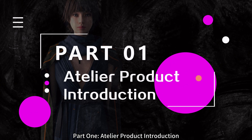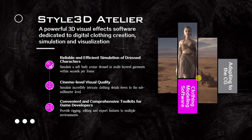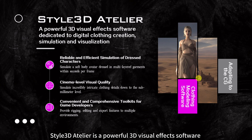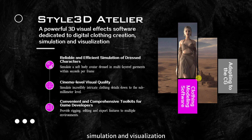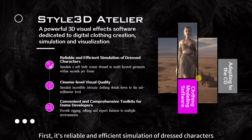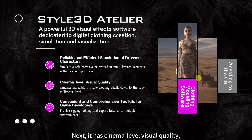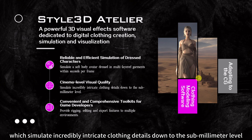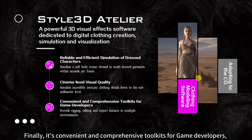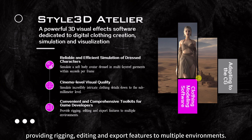Part 1: Atelier Product Introduction. Style 3D Atelier is a powerful 3D visual effects software dedicated to digital clothing creation, simulation, and visualization. First, it offers reliable and efficient simulation of dressed characters. Next, it has cinema-level visual quality, simulating incredibly intricate clothing details down to the submillimeter level. Finally, it provides convenient and comprehensive toolkits for game developers, including rigging, editing, and export features to multiple environments.